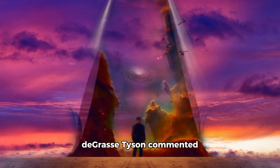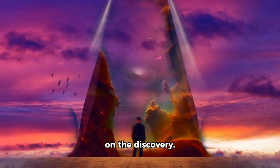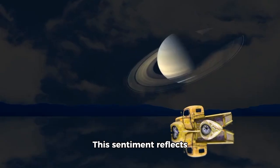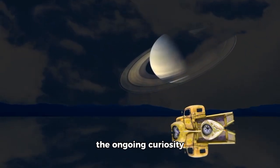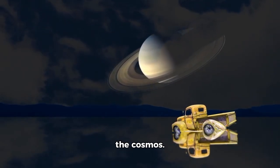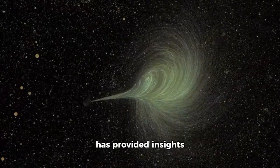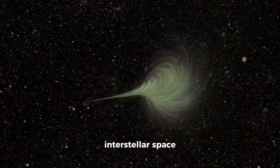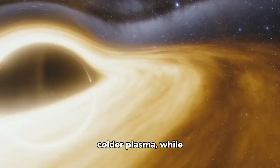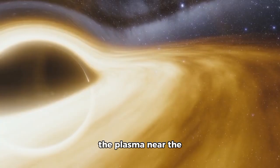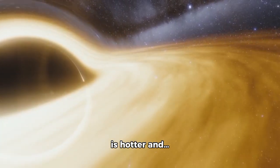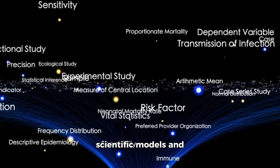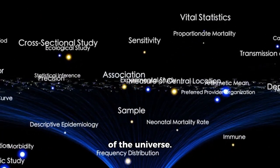Astrophysicist Neil deGrasse Tyson commented on the discovery, stating, we will find things in space that will challenge our minds. This sentiment reflects the ongoing curiosity and drive to understand the cosmos. The data from Voyager 1 has provided insights into the interstellar medium, revealing that interstellar space consists of denser, colder plasma, while the plasma near the solar system's boundary is hotter and less dense. These findings have challenged existing scientific models and deepened our comprehension of the universe.